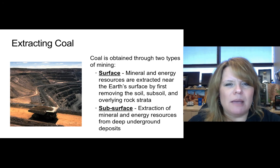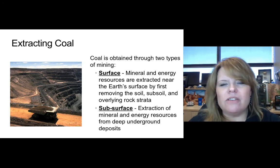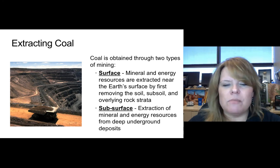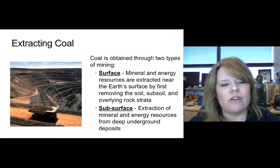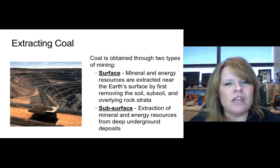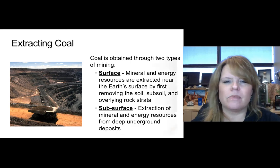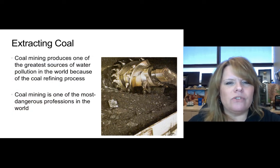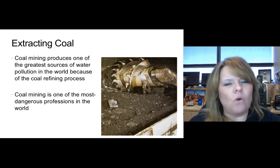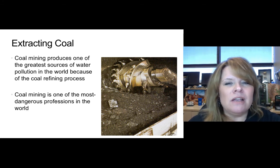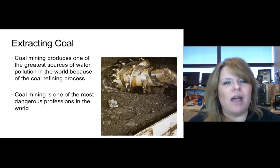Coal is obtained through two types of mining: surface mining and subsurface mining. Surface mining extracts resources near the earth's surface by first removing the topsoil, subsoil, and overlying rock strata. Subsurface mining requires drilling down underneath the surface and creating tunnels underground to extract coal deposits. Coal mining produces one of the greatest sources of water pollution in the world because of coal refining processes, and it is one of the most dangerous professions.